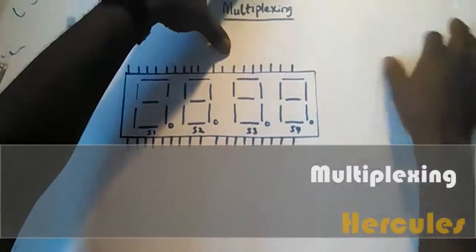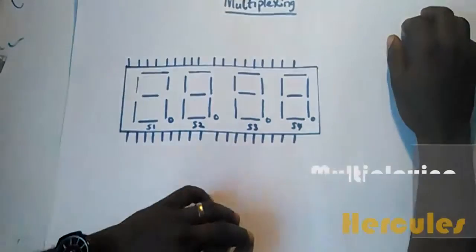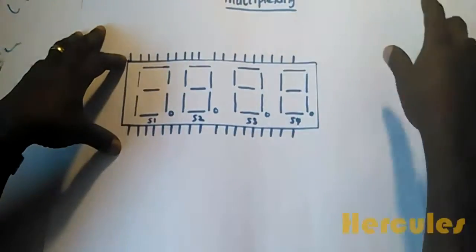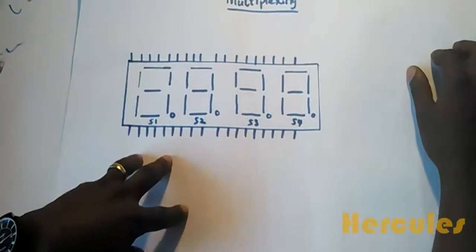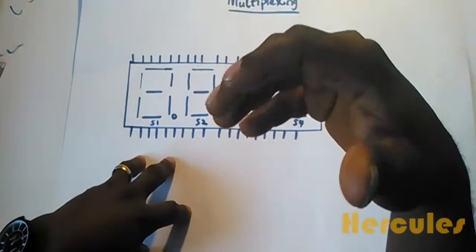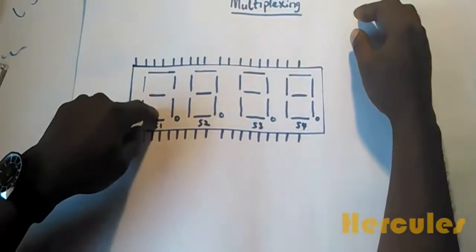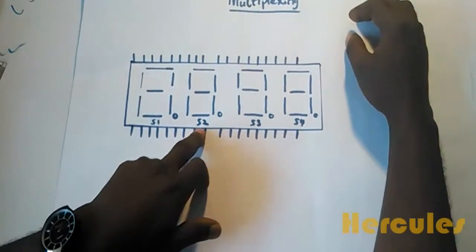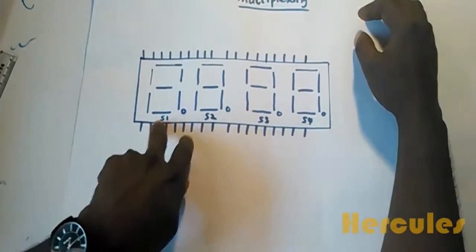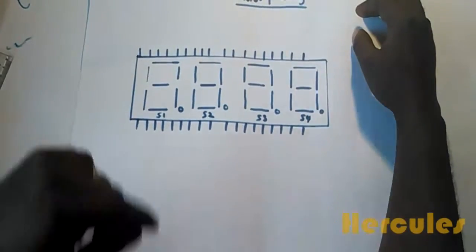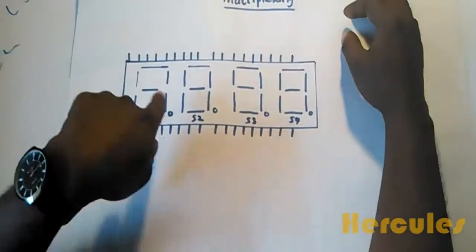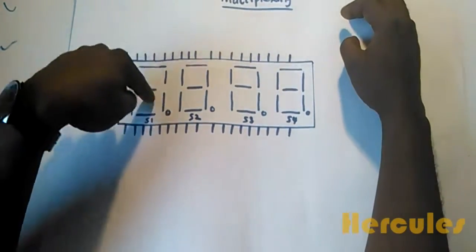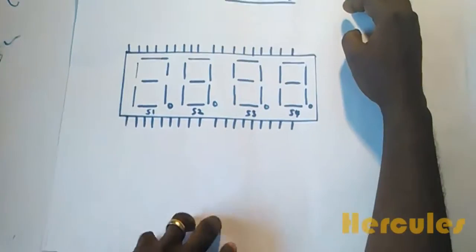This is a scenario where we're using a 4-digit 7-segment unit. The 4-digit segment unit has segments like segment 1, segment 2. That's what S1 through S4 means. For each of the different segment units, they all have their respective a, b, c, d, e, f, g pins.